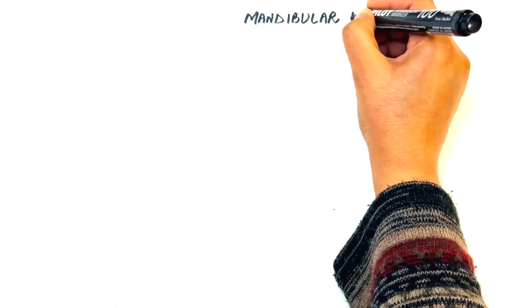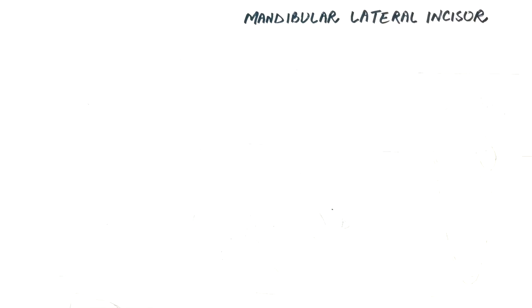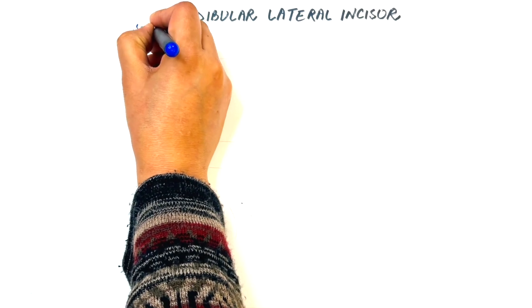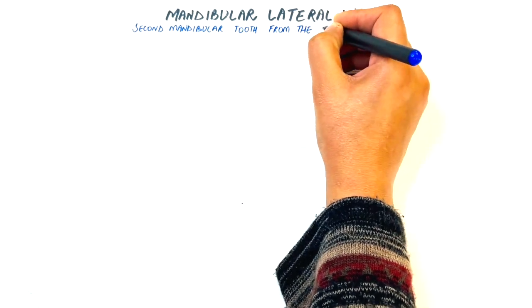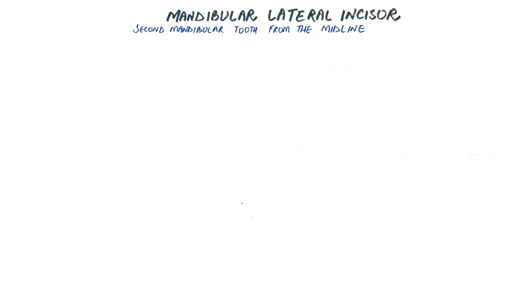So let's begin. In today's video we will talk about the mandibular lateral incisor. The mandibular lateral incisor is the second mandibular tooth from the midline. It resembles the mandibular central incisor in all aspects except for a few differences. Please watch my previous video on mandibular central incisor to have a more in-depth understanding of this video on lateral incisor.